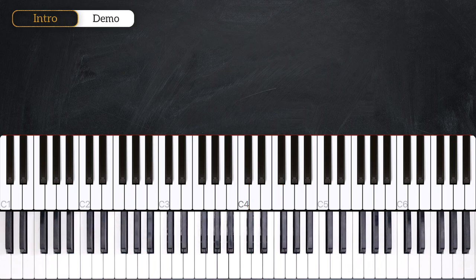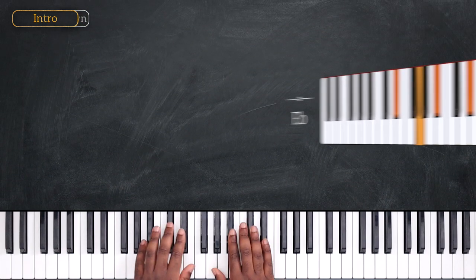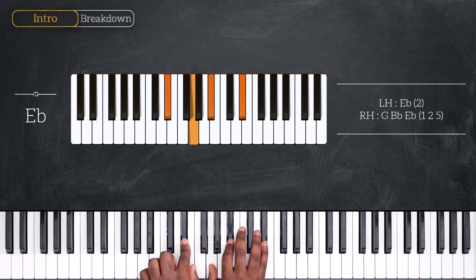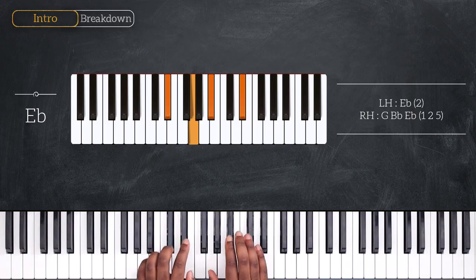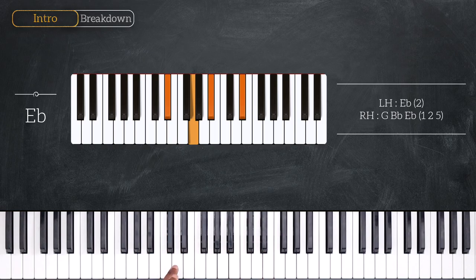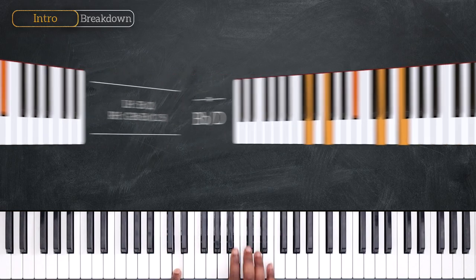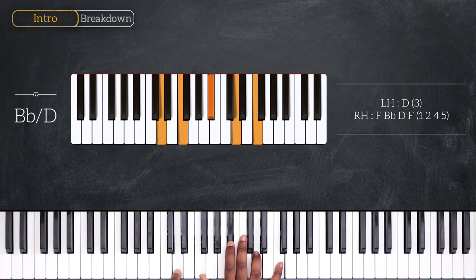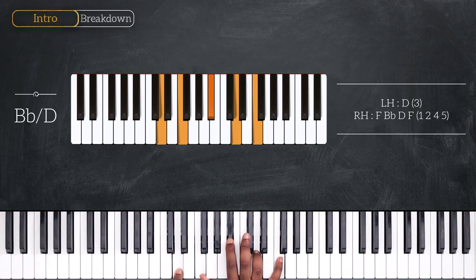For the chords, we're starting with Eb, using one note on the left, Eb, and then G, Bb, Eb right hand. From here, we're going to go down in the key of Bb. After that, we have D on the left and Bb on the right hand. So that's Bb over D with F, Bb, D, and F.